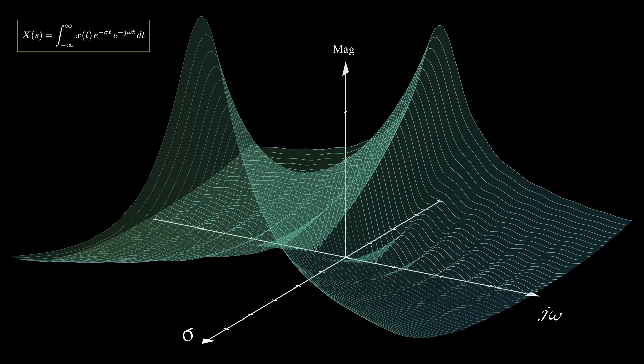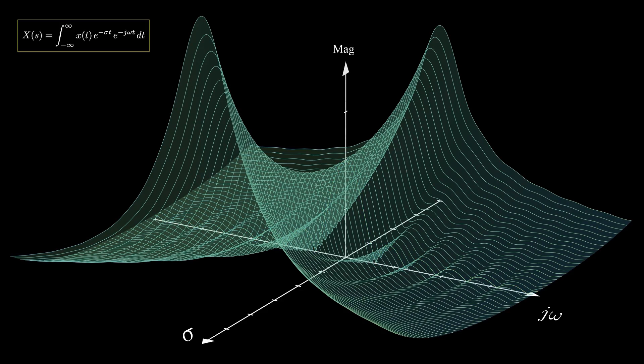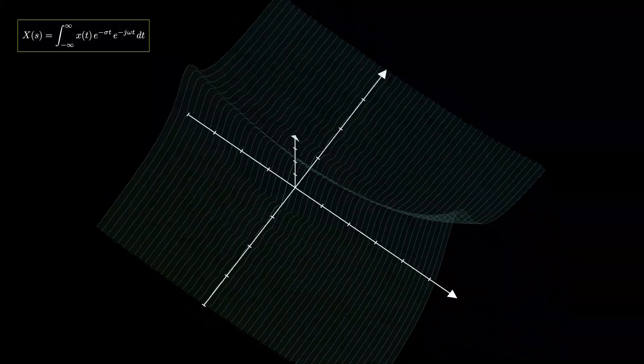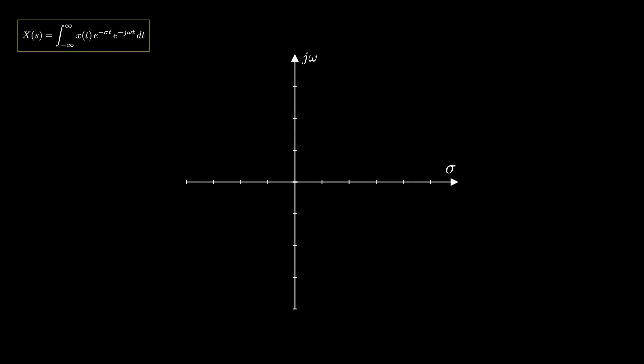Just as the Fourier transform, the Laplace transform has its own magnitude and phase spectrum. But because Laplace has two degrees of freedom — sigma and j omega — the magnitude and phase spectrum are 3D surfaces rather than normal 2D plots. The Fourier transform is just a slice of the Laplace transform, typically when sigma is equal to zero. So, the Fourier magnitude and phase spectrum are plotted versus the frequency axis, while those of Laplace are plotted on what's called the S plane.